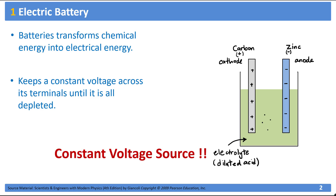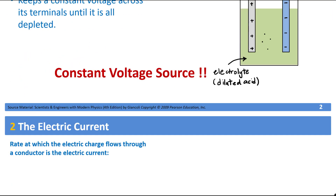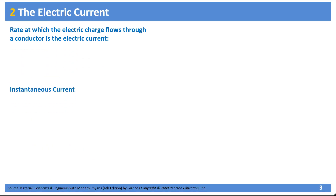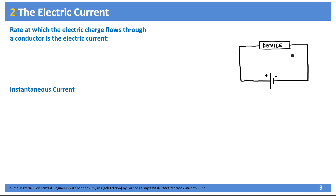Now that we have a very basic understanding of how batteries work, let's go ahead and define the electric current. The electric current is defined as how much charge passes through a conductor per unit time, or another way to rephrase that: the rate at which the electric charge flows through a conductor is called the electric current.